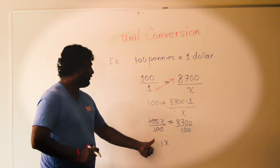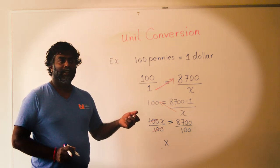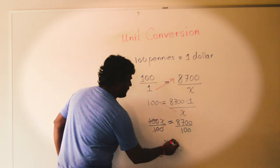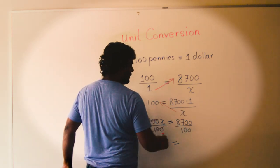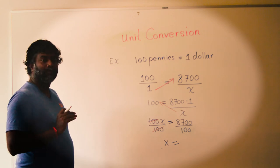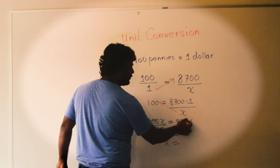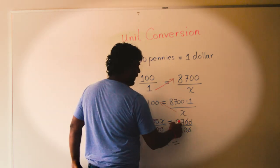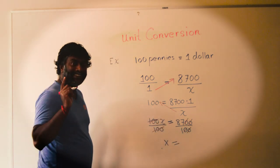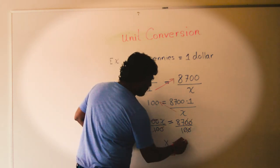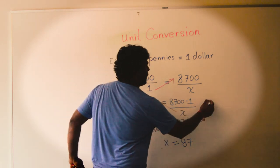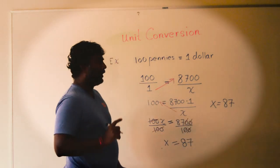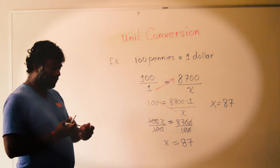So you have 1X, which is just X. Now, 8,700 divided by 100 — when you divide by 100, you cancel the two zeros on top and the two zeros on the bottom. What is left? 87 divided by 1. Any number divided by 1 is going to be the same number, so X is 87. That means you have 87 dollars in your penny jar. That's how you convert it.